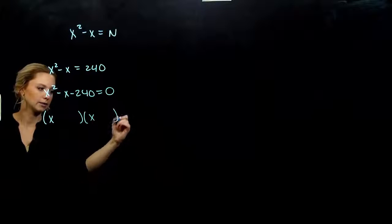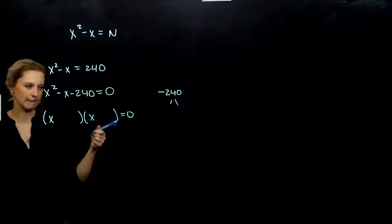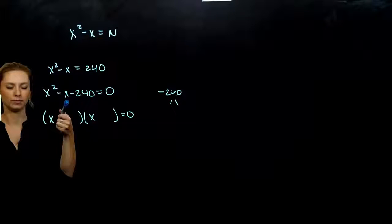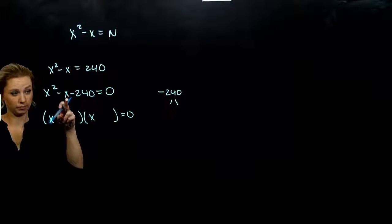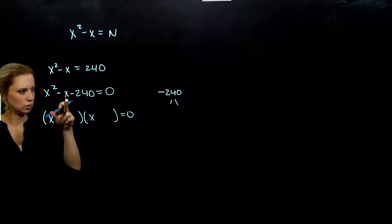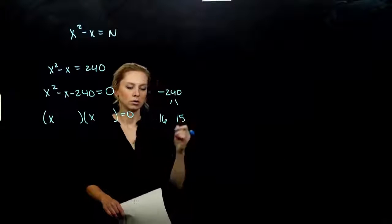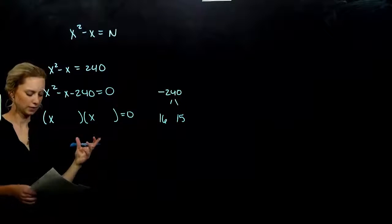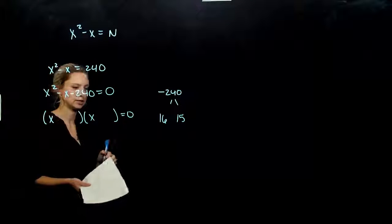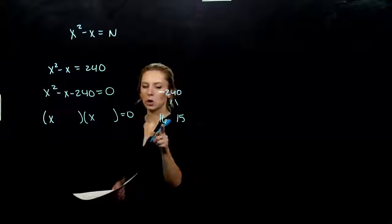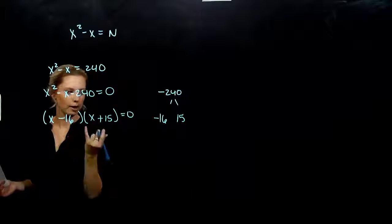Let's factor. There's a 1 on the front, so we'll have an x and an x. We need to break up negative 240 into factors that multiply to negative 240 and add to negative 1 — meaning the factors are really close together. 1 and 240 won't work, 2 and 120 won't work — they're too far apart. The closest combination is 15 and 16. The larger one needs to be negative, the smaller positive, giving (x + 15)(x − 16) = 0.